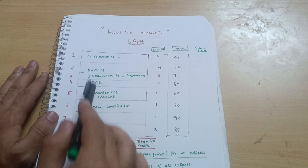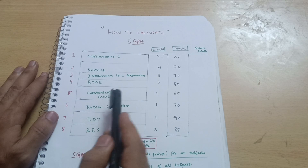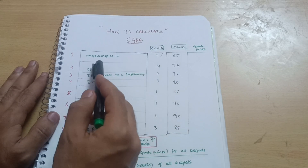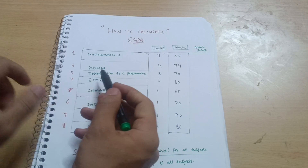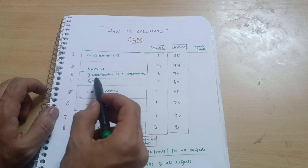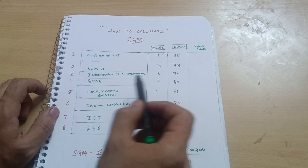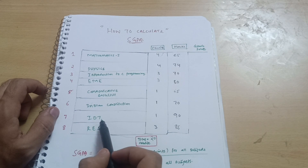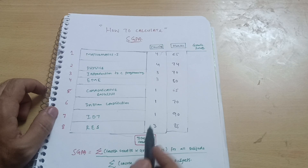I have taken here the example of P cycle — it doesn't matter whatever cycle you have, either P cycle or C cycle. There are credits mentioned in your syllabus copy. For P cycle: Mathematics has 4 credits, Physics has 4 credits, Introduction to C Programming has 3 credits, Elements of Mechanical Engineering has 3 credits, Communicative English has 1 credit, Indian Constitution has 1 credit, IDT (Innovation Design and Thinking) has 1 credit, and Renewable Energy Sources has 3 credits.